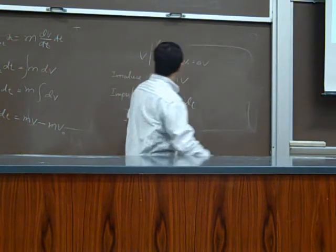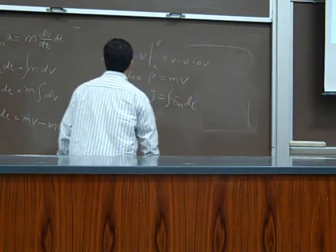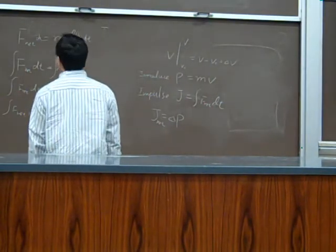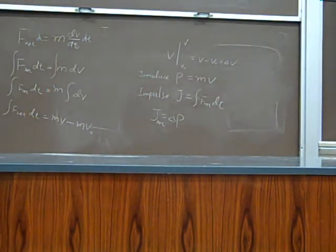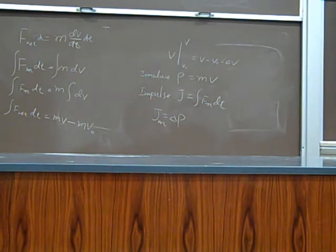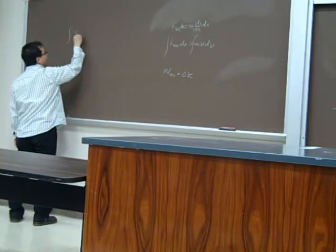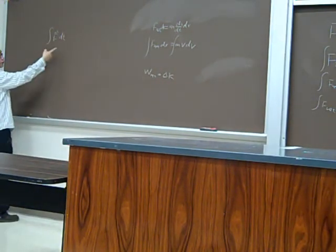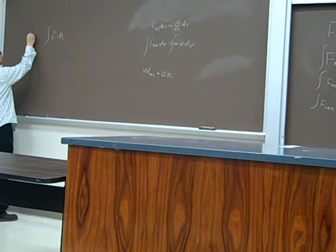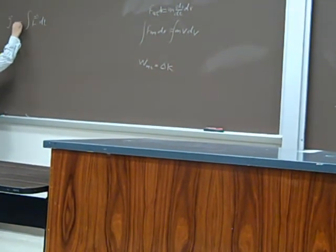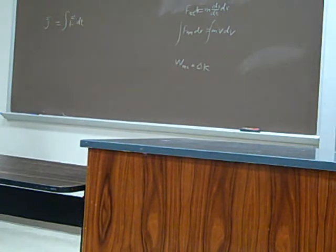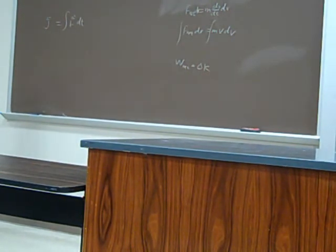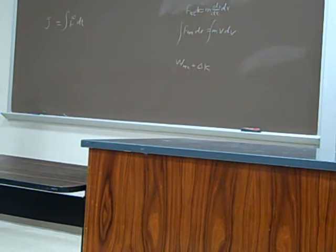For the impulse, j equals to this one. If we do it in three dimensions, then it will be the vector force integrated with time. So after you do that, you still get a vector. So j, the impulse, is actually a vector. The direction is the same as the force.